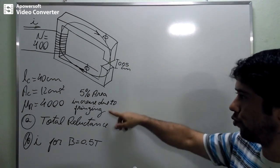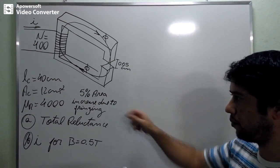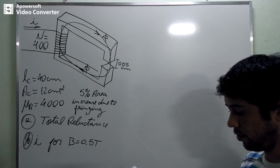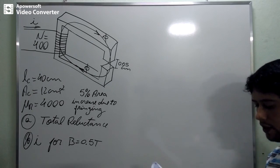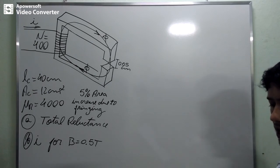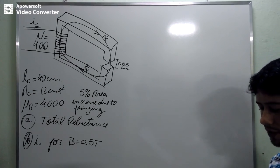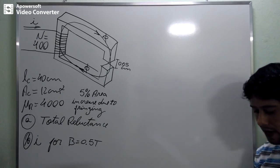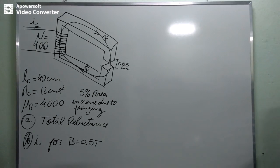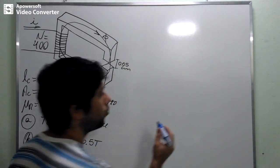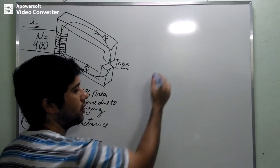If we assume that the fringing in the air gap increases the area by 5%, let's calculate then the problem says. Calculate the total reluctance and letter B, calculate the current required to produce a flux density of 0.5 tesla in the gap. This is what we are going to do and let's calculate this.